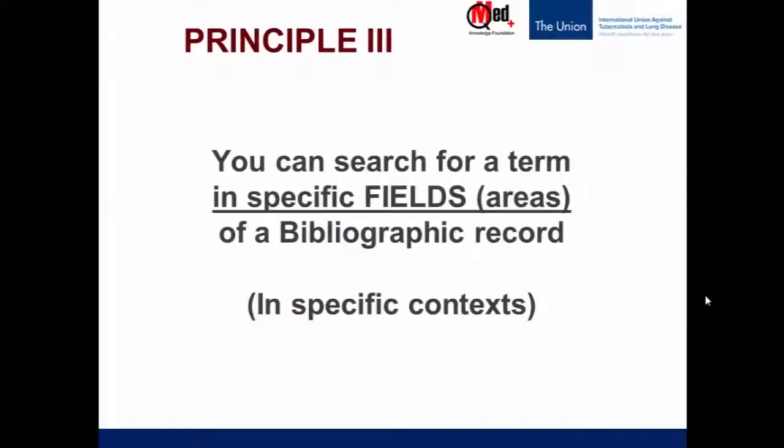So the third principle is: you can search for a term in specific fields or areas of a bibliographic record. Note that these factual tag searches are not searches on topics — they are searches done in specific contexts, like wanting articles from a specific journal, or knowing the publications from a specific institute. These are the contexts in which you use Principle 3. Thank you, and do go on to the fourth principle, which would be the next one.